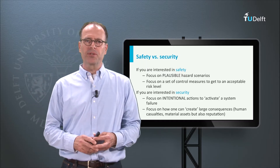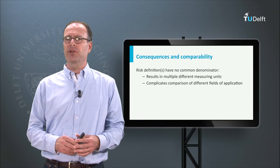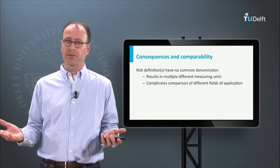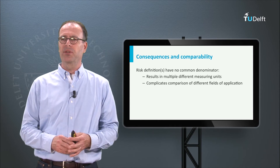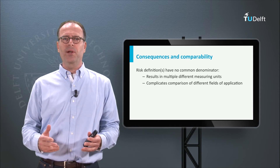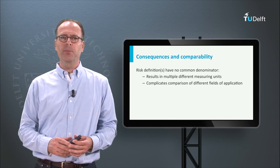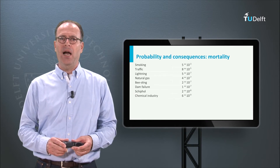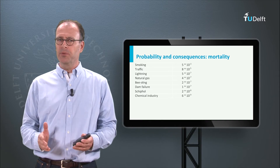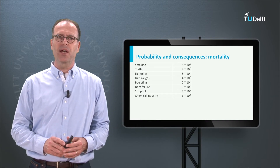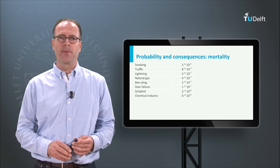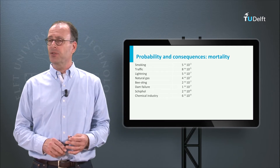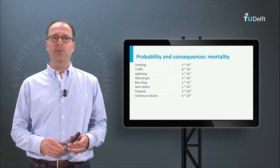One of the problems with risk quantifications is that they do not have a common denominator — otherwise we are comparing apples with bananas. So you will see risk quantifications in different guises, and if you want to compare risks of different activities, always make sure you use the same measurement units. Looking at some numbers, they appear to express the overall probability that a person dies of a particular cause during their life. For instance, the probability of dying from smoking is 5 × 10⁻³ — so of a thousand smokers, 5 die because of smoking.